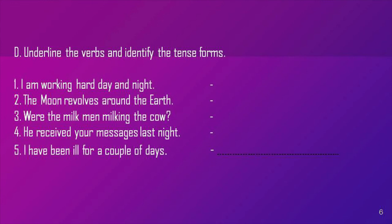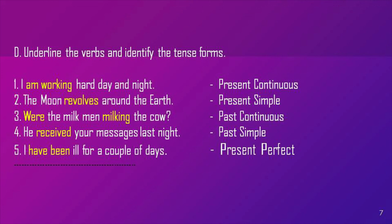Underline the verbs and identify the tense forms. I am working hard day and night: present continuous tense. The moon revolves around the earth: simple present tense. Were the milkmen milking the cow: past continuous. He received your messages last night: past simple. I have been ill for a couple of days: present perfect.